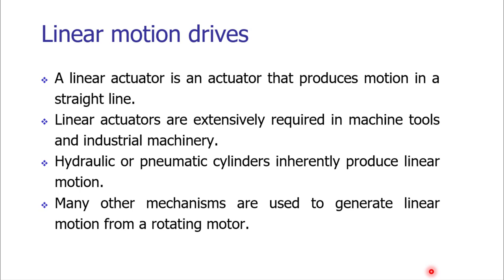In automated equipment, we need various linear motions — linear relative movements with the variety of links of the machine. A linear actuator is an actuator which produces motion in a straight line. We require linear actuators in machine tools as well as a variety of industrial machinery for conveyance, transportation, painting, packaging, and auxiliary operations in automated manufacturing.